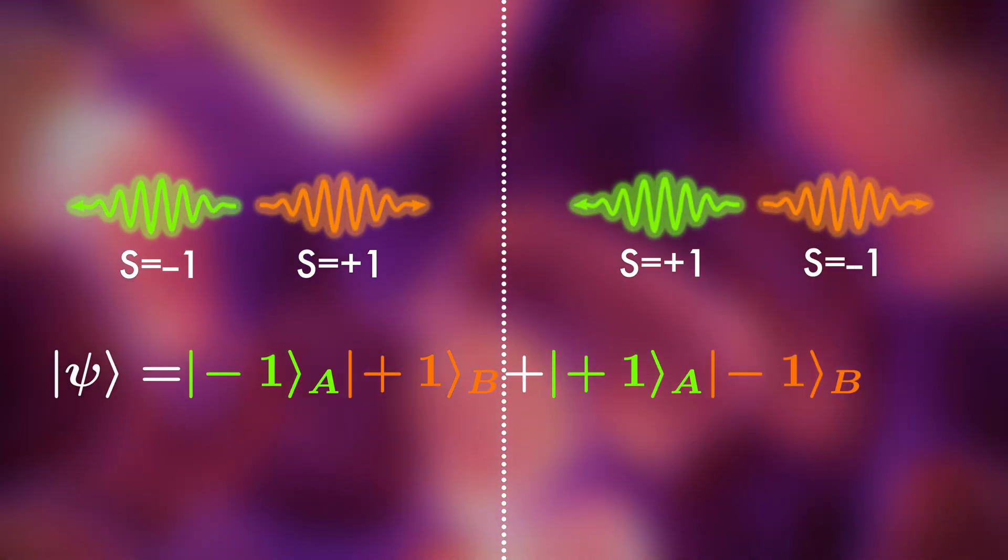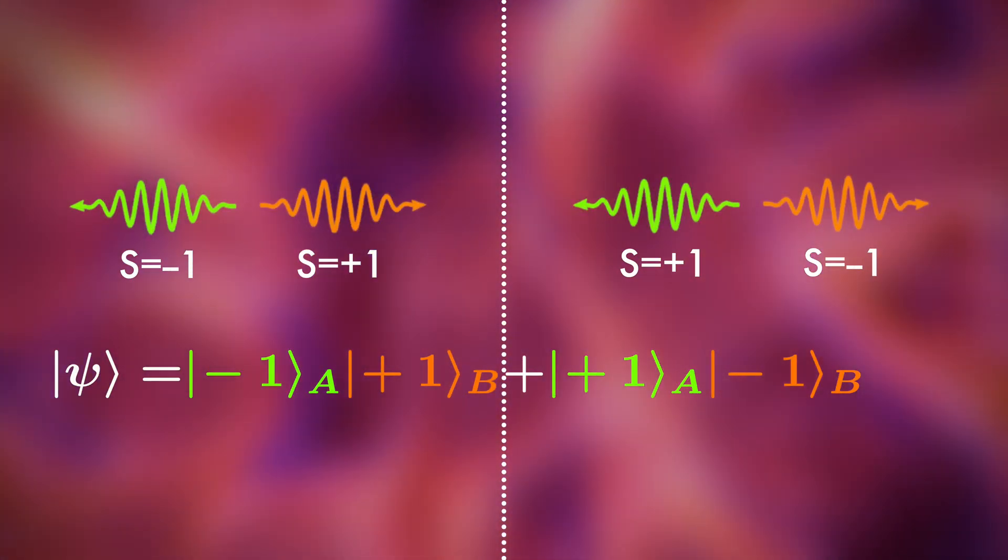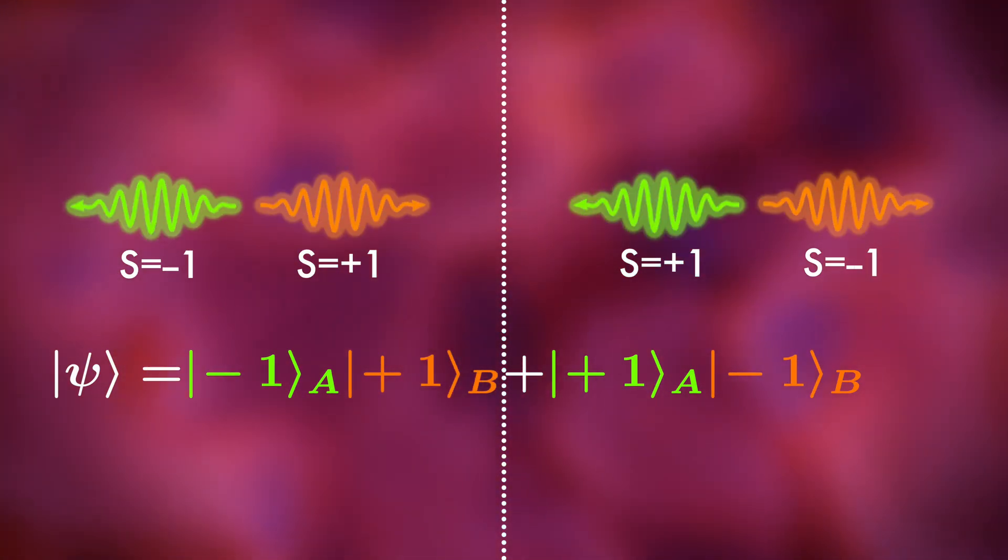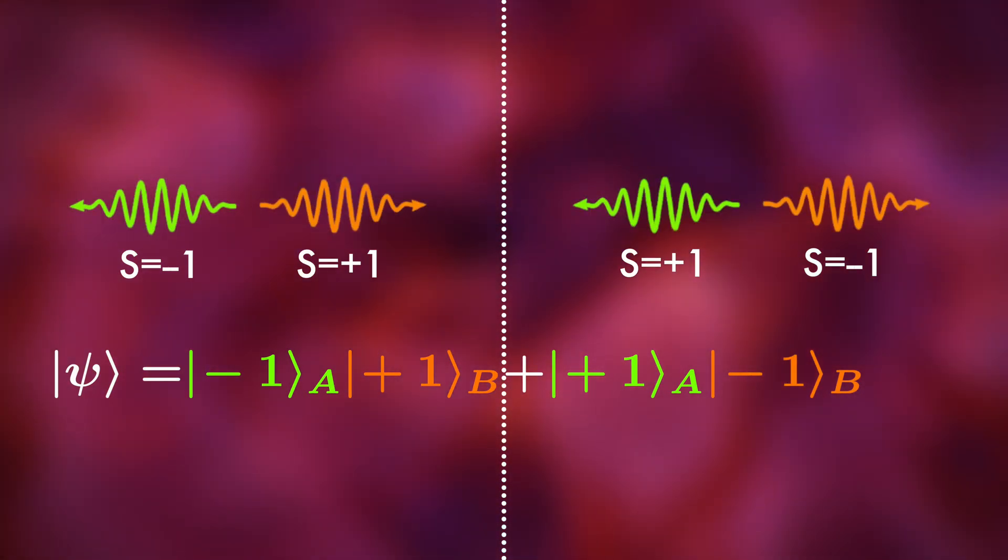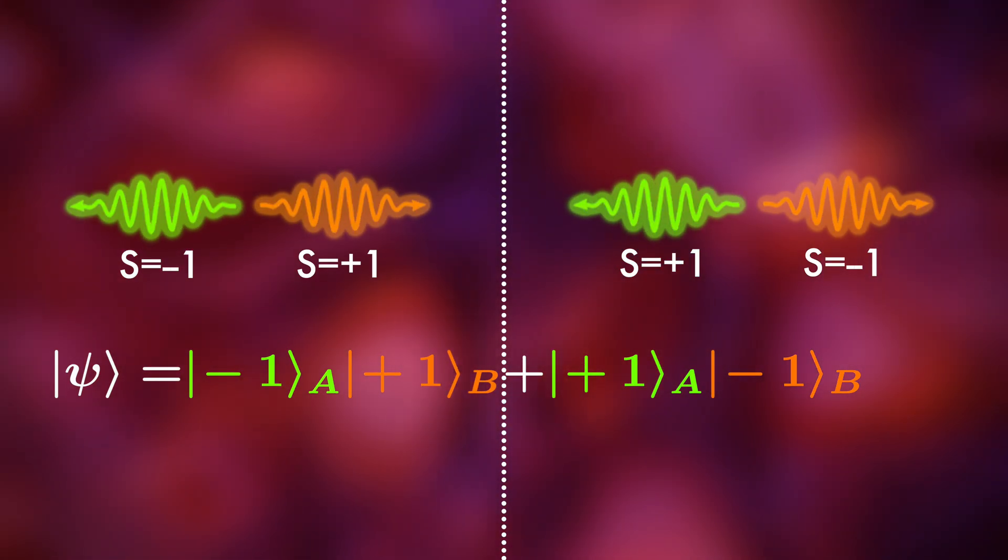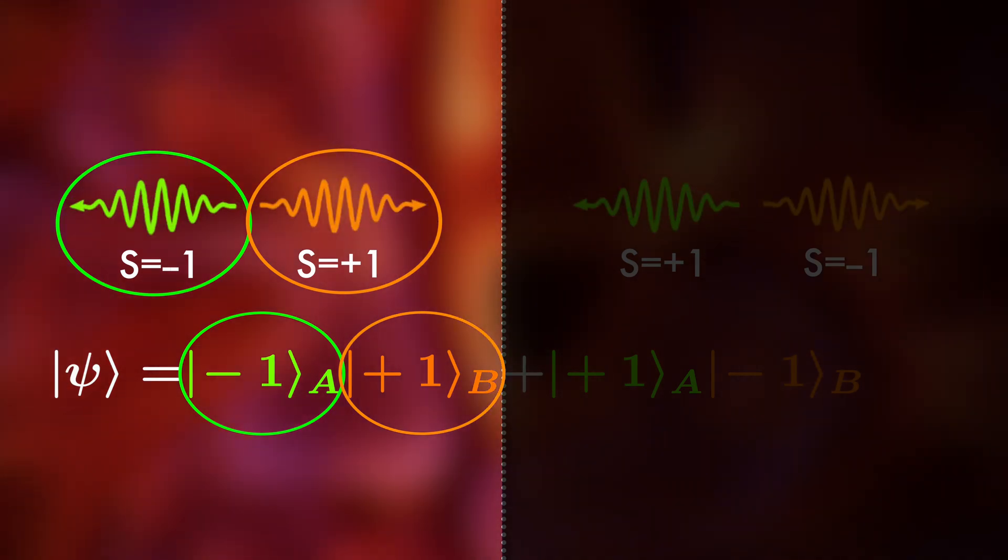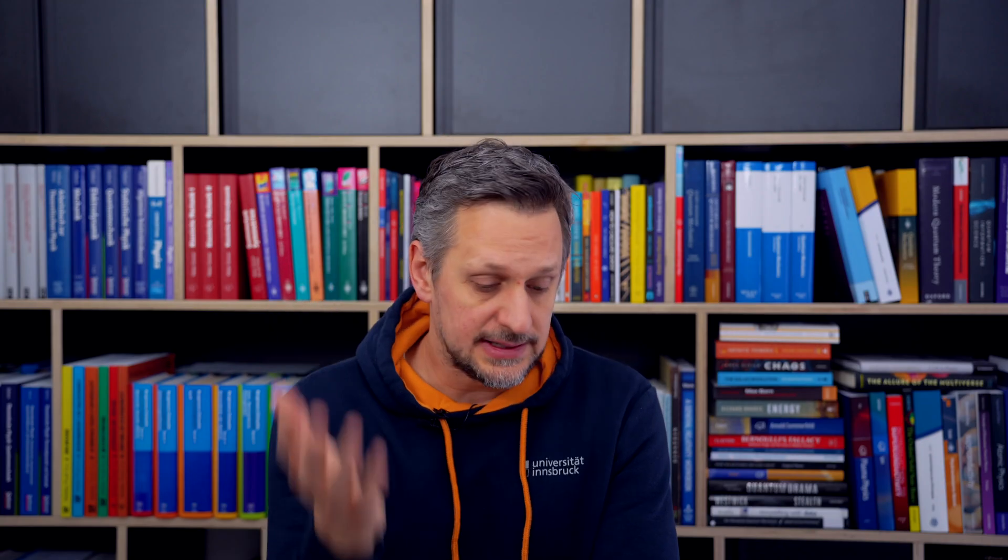Rather, a superposition, a combination of both possibilities is created. This description tells us that whatever photon we measure, the other one must have the opposite spin. We cannot predict what the measurement outcome will be, but once we get a result, we immediately know that the other photon has the opposite spin. This is the meaning of entanglement.